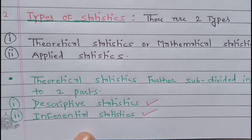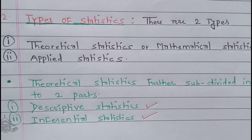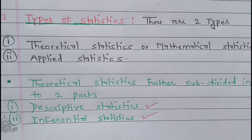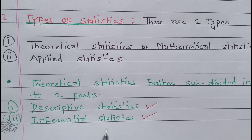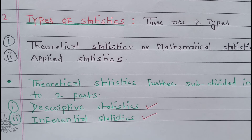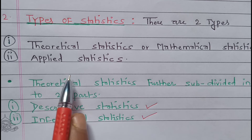In inferential statistics, samples are taken from the population in such a way that the drawn sample can represent the entire population. Different statistical techniques are used to draw valid conclusions on the basis of statistical measures calculated from the sample data, so that the conclusion can be representative of the whole data — that's called inferential statistics.